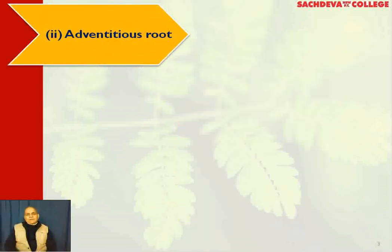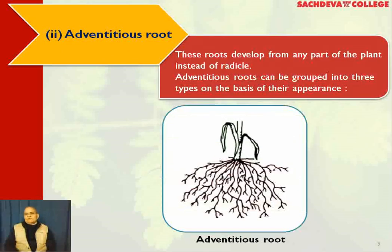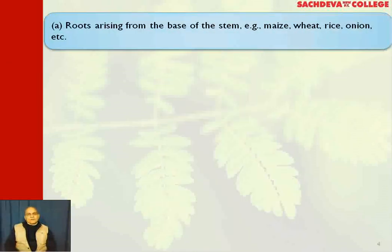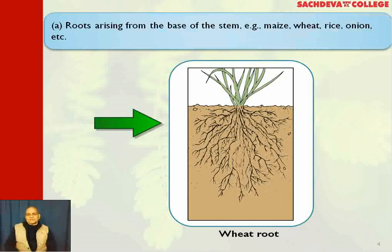Then you have the adventitious roots. These roots develop from any part of the plant instead of the radicle, which is of course short-lived. Adventitious roots can be grouped into three types on the basis of their appearance. The first type is roots arising from the base of the stem. Examples are maize, wheat, rice, onion, etc. These adventitious roots arise from the base of the stem, as in the case of wheat.